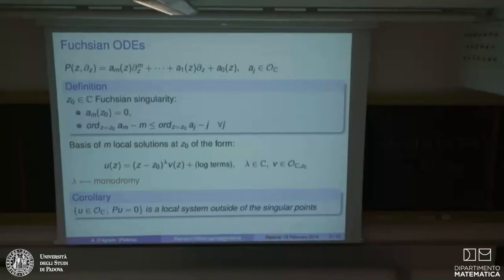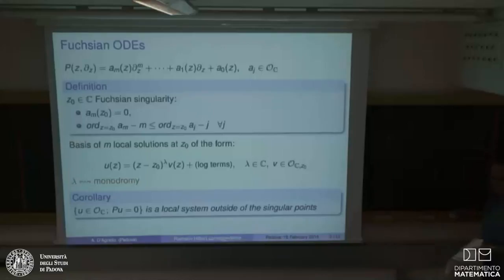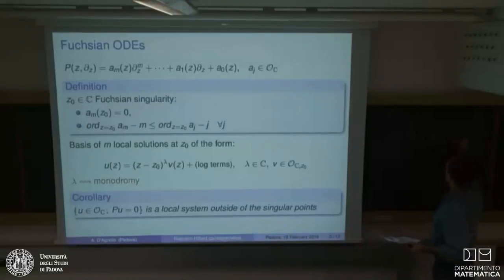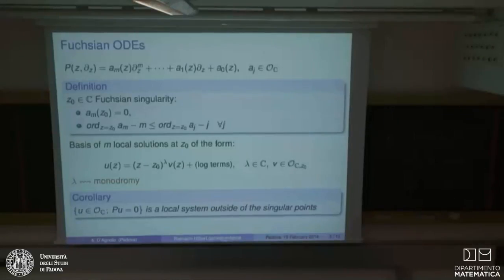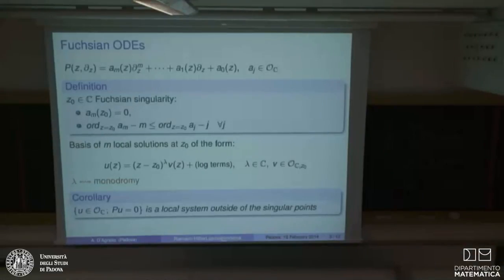Of course, this is not possible directly. There is a very easy example: you can consider an ODE of order zero, which is just multiplication by something. You can consider the equation 1·u=0 or Z·u=0. These operators are quite different, but the induced local system is exactly the same — the trivial local system outside of the origin. So you need extra conditions, attaching some data to the singularities themselves, and considering not only the homogeneous equation P(u)=0 but also the inhomogeneous equation.